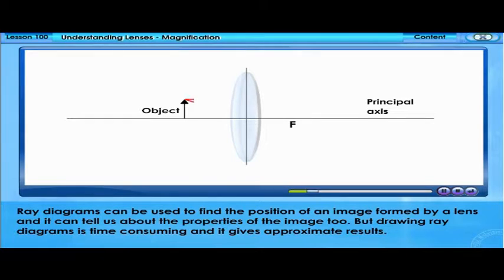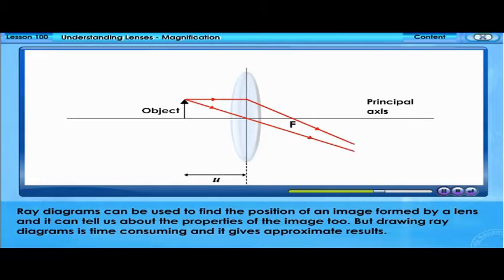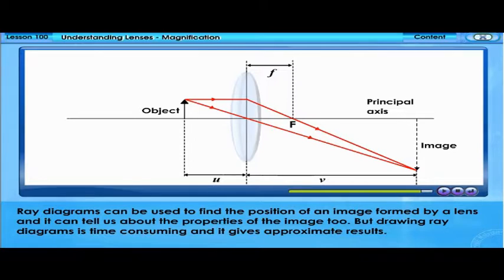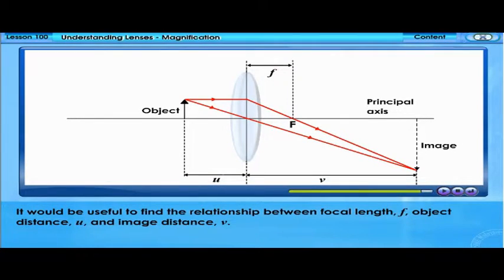Ray diagrams can be used to find the position of an image formed by a lens and tell us about the properties of the image. But drawing ray diagrams is time-consuming and gives approximate results. It would be useful to find the relationship between focal length F, object distance U, and image distance V.